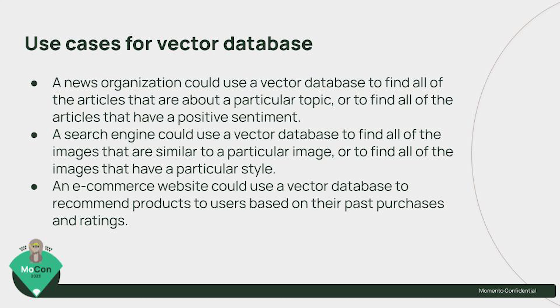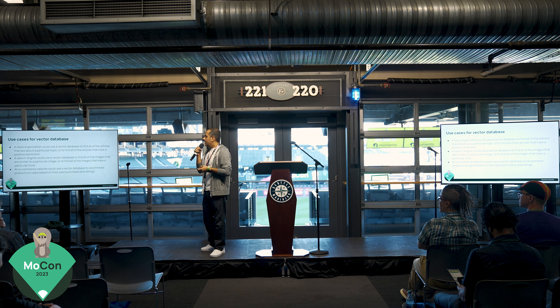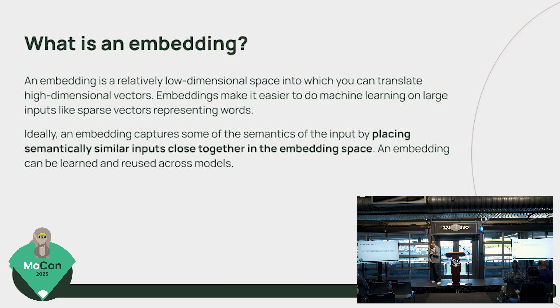Typical use cases: if you're a news organization trying to find articles similar to a topic, or building a sentiment search engine — just like Manju mentioned — you can use a vector database. E-commerce websites are another example. Every example is kind of spot-on. So let's start with the basics: what is an embedding?